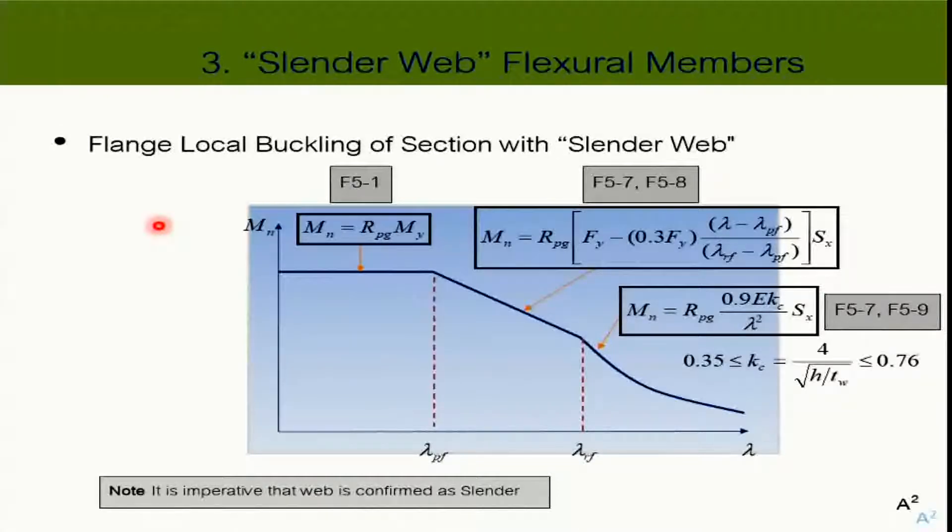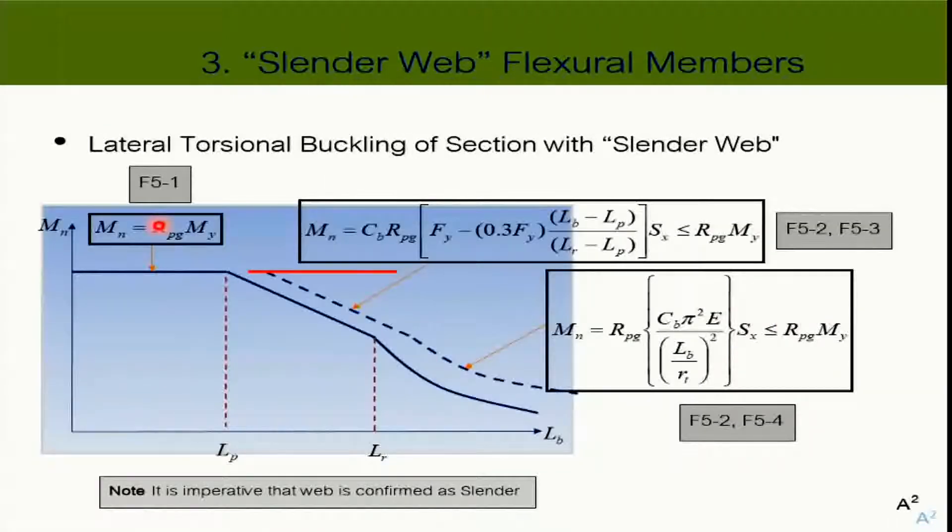But now, the punishment for the plate girder is very very huge. You see, you remember Mr before, it's 70%, right? It's 0.7 Fy multiplied by S. Here is 0.3. Because they're so afraid of the effect of the residual stress, because this is built up section. And here is My multiplied by the elastic section modulus. And then, the rest of the form is pretty much the same. And likewise for lateral torsional buckling.